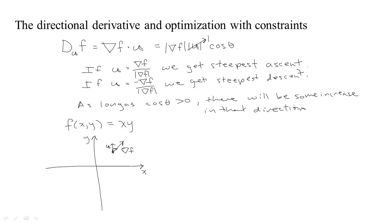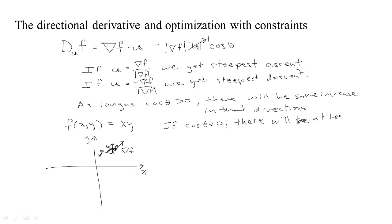On the other hand, if you head off in some other direction v where the angle between the gradient of f and that direction is more than 90 degrees, then the cosine is negative, which means you're going to see some decrease. So if the cosine of theta is less than zero, there will be at least some decrease in that direction.